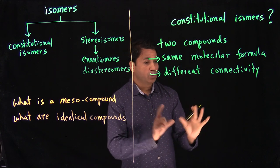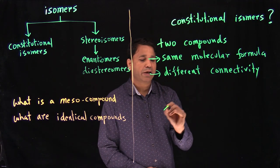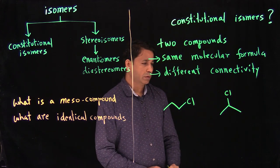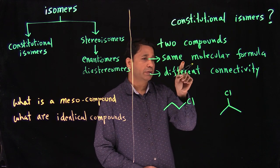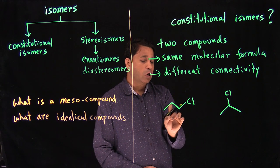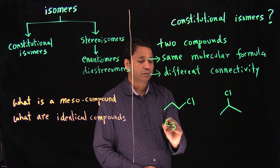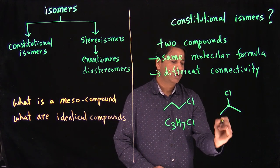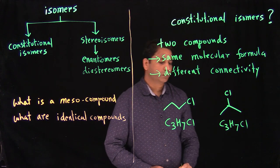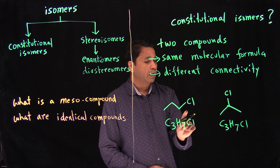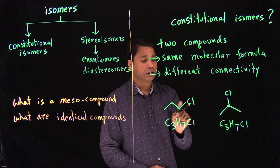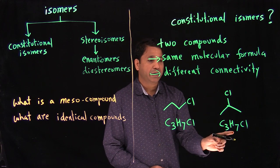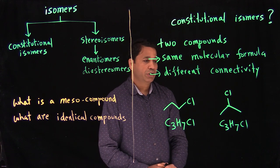We're comparing two different structures. For example, if we have a chlorine placed at different positions on a three-carbon chain, both compounds have the same molecular formula — C3H7Cl — with three carbons, seven hydrogens, and one chlorine. But they are two different structures with different nomenclature: one is 1-chloropropane and the other is 2-chloropropane. These kinds of compounds are called constitutional isomers.